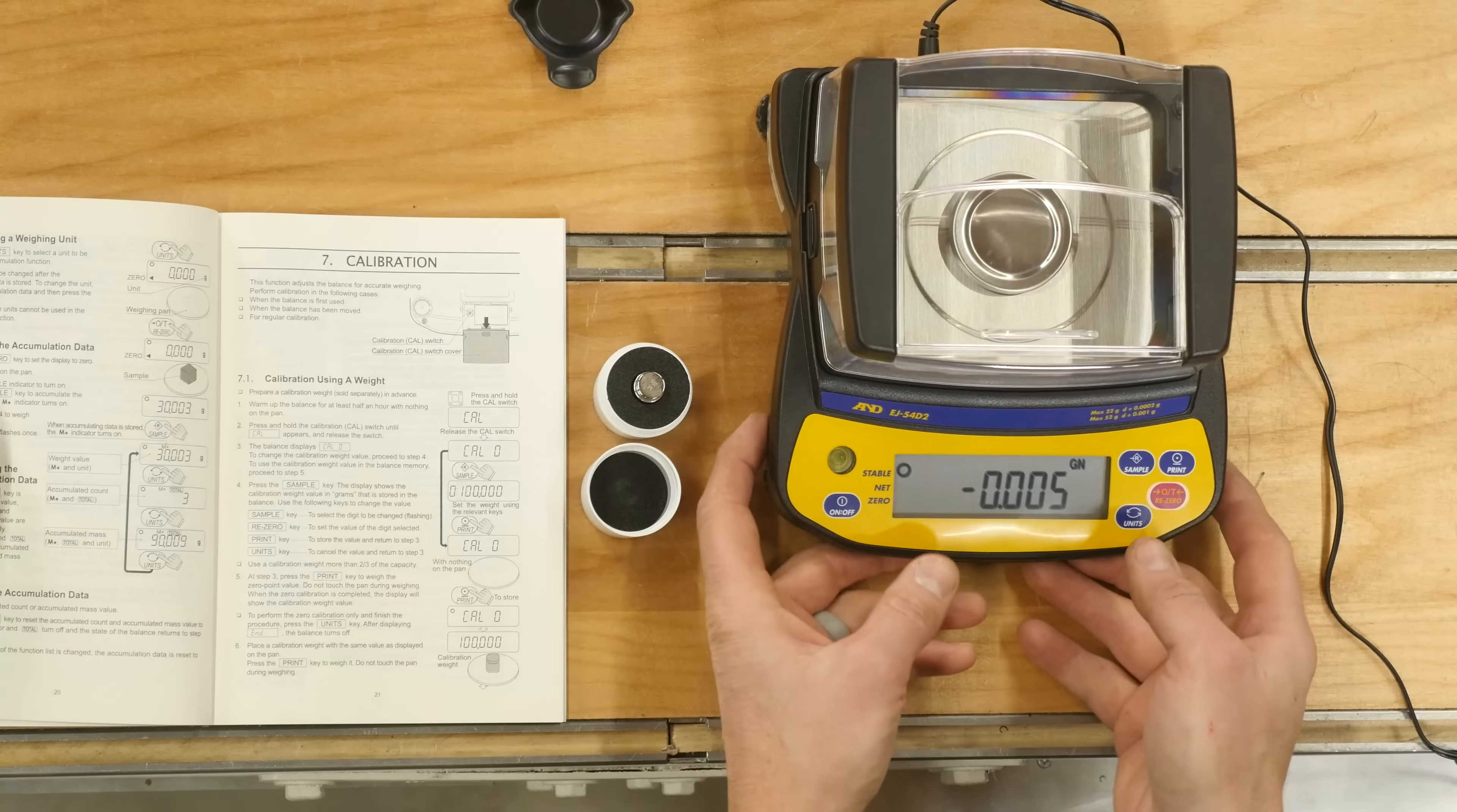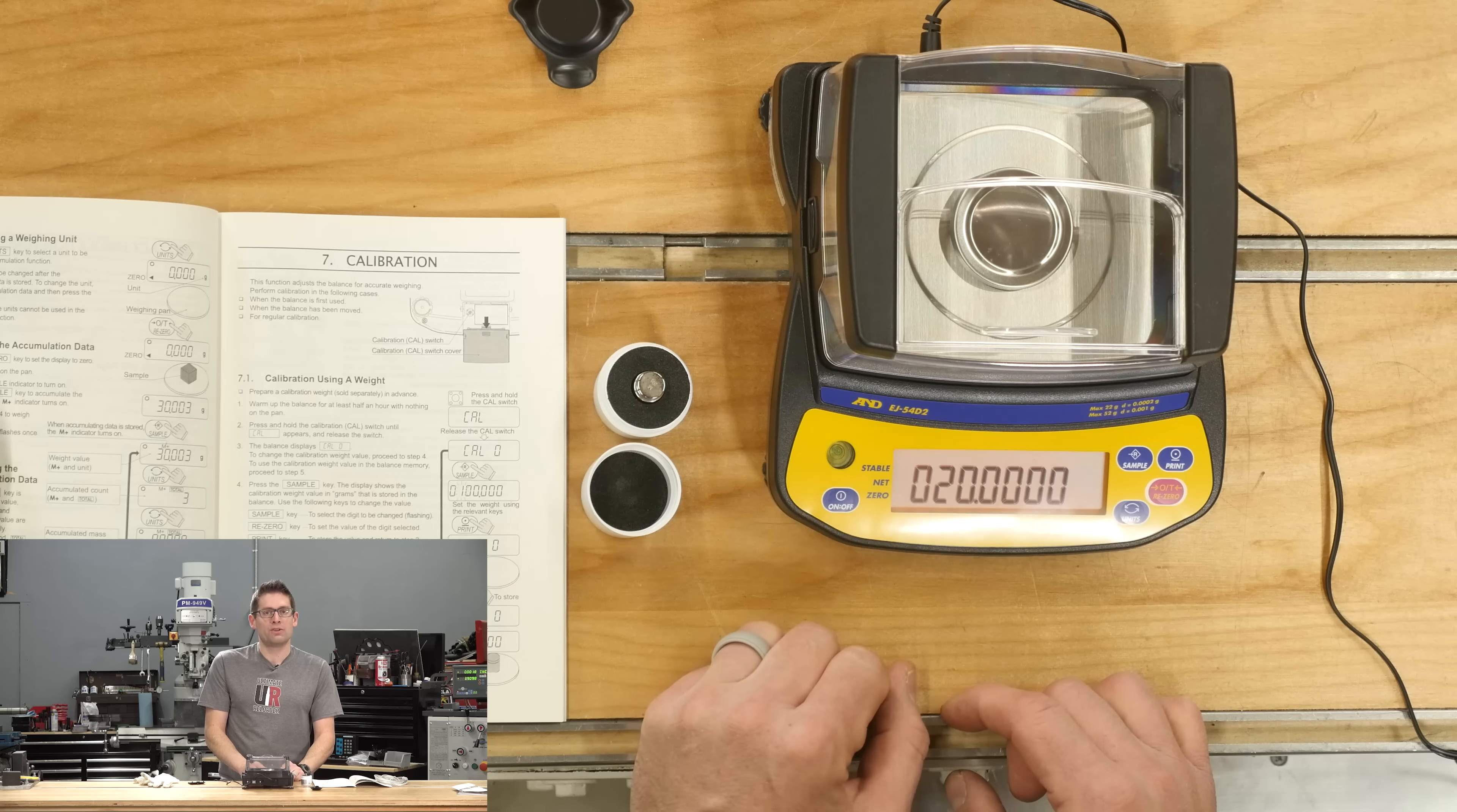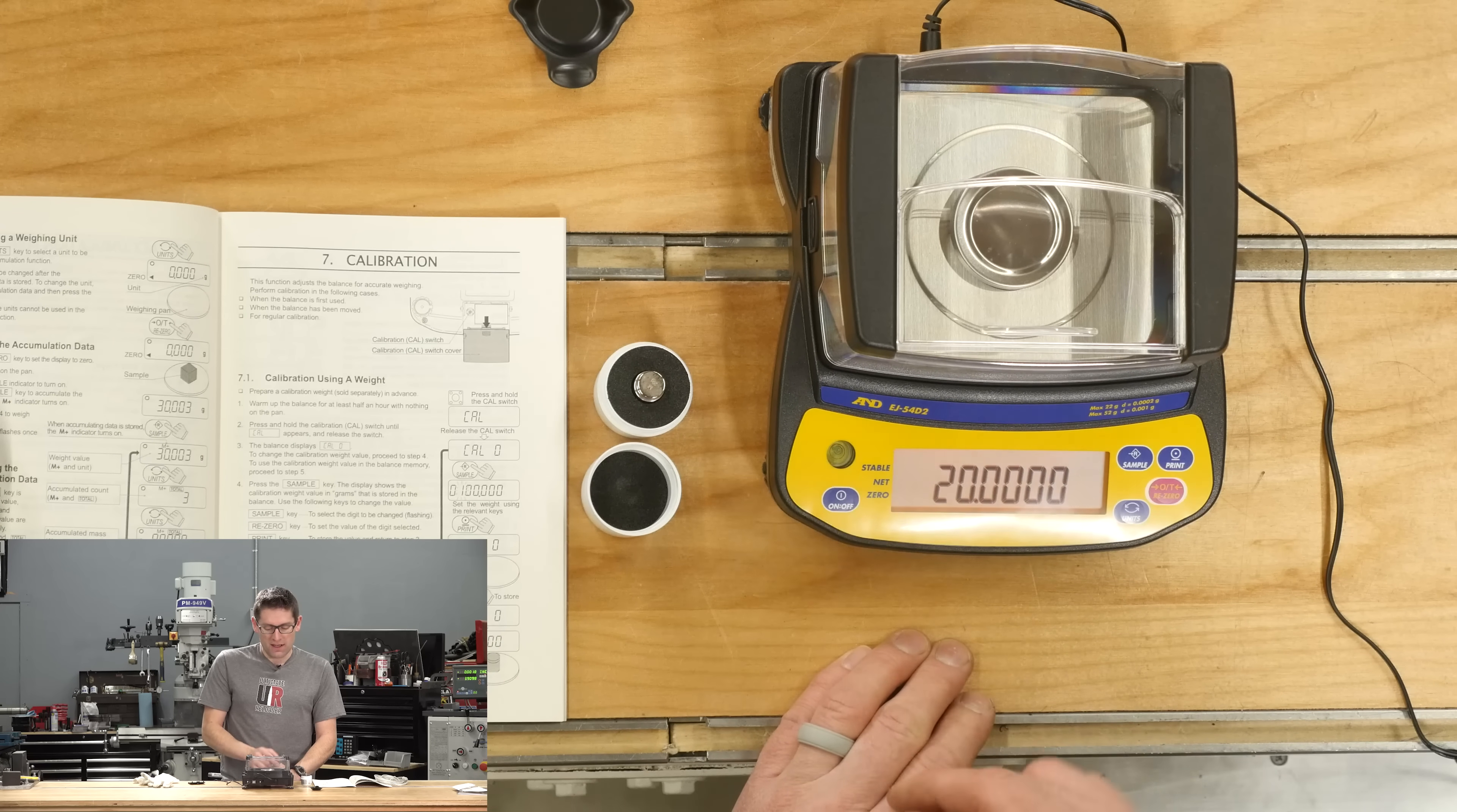Now, to calibrate, there's a little plastic door under the front of the unit. We're going to pop that off, and there's a tiny little button here. We're just going to hold that until it displays CAL. I have a 20-gram weight that I got separately from Cambridge Environmental, and if we hit sample, it's going to show us what the calibration weight is that the scale thinks we're using. It says 20 grams. If it's not matching here what you have, you can very easily change that. We're going to hit print to calibrate just with the platen, and then it says 20.